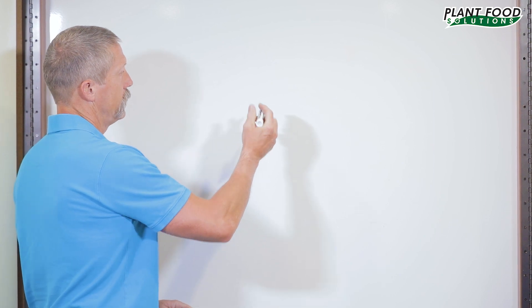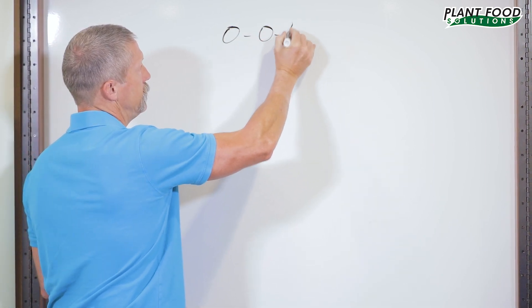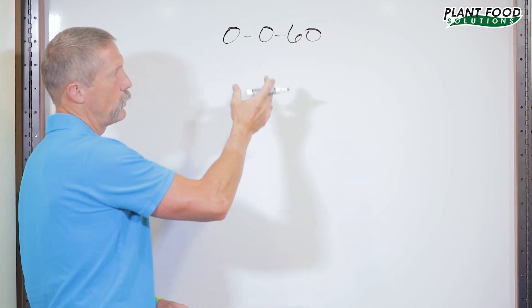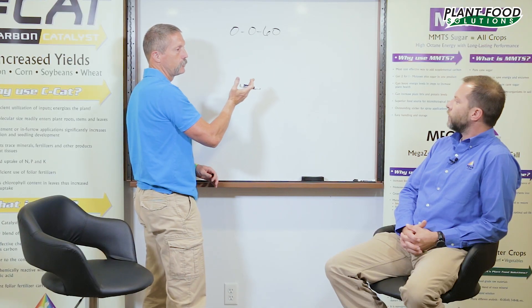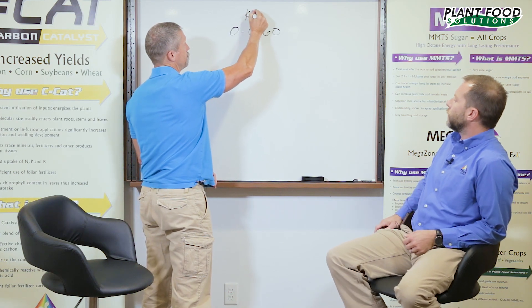I'll just go to the board here and show you a little example about the difference when you use dry fertilizer versus liquid. Let's say if we're going to use muriate potash, which is 0-60. That's the number two fertilizer sold in the U.S. The chemical symbol for that is KCl.